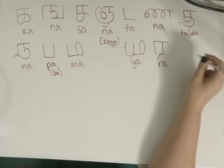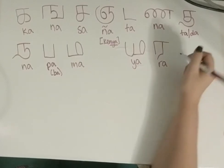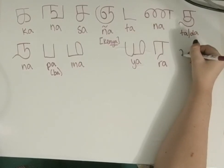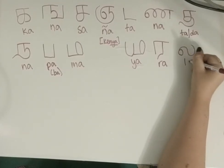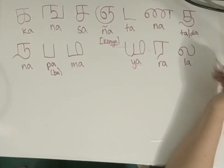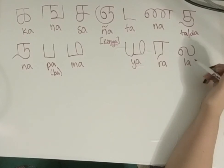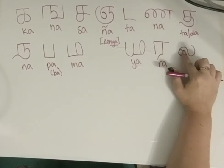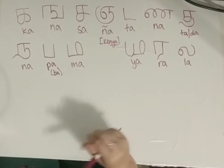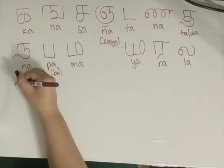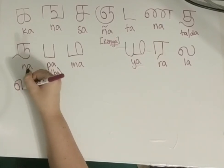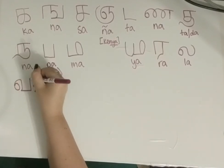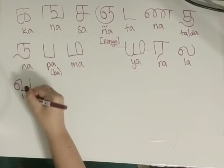Next is La — we've got quite a few La's in this language. Here's the first one. This is La — it almost reminds me of the La in Burmese, very close but not quite. And then we have Va, which looks almost like La but slightly different. Va.